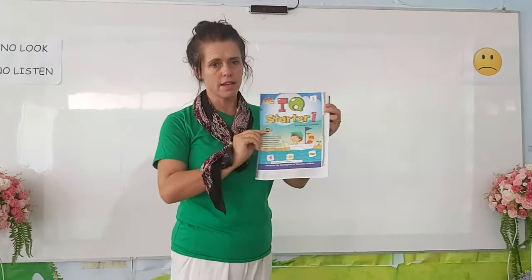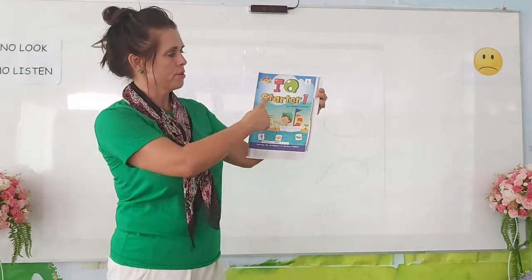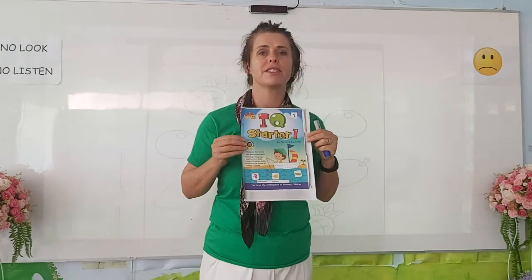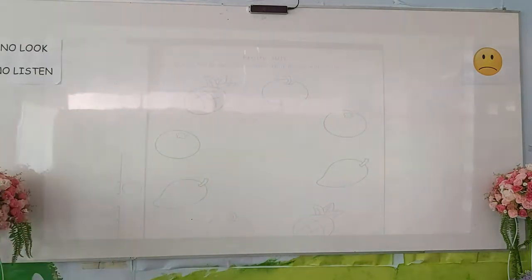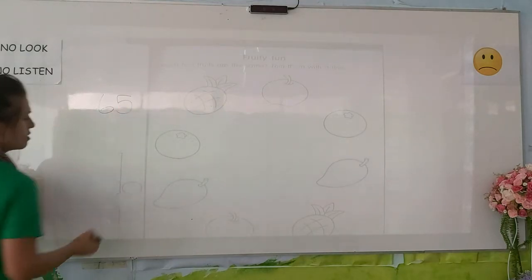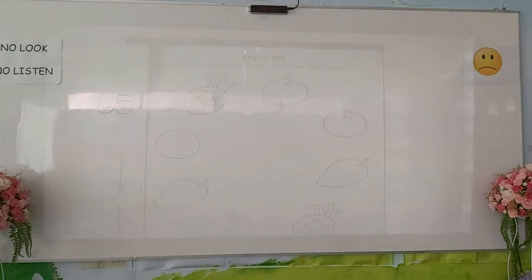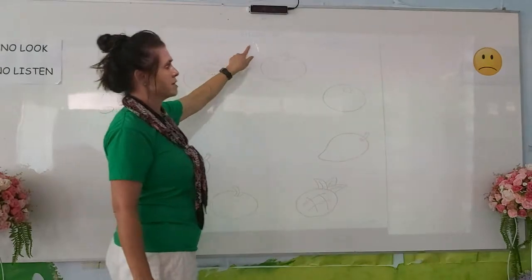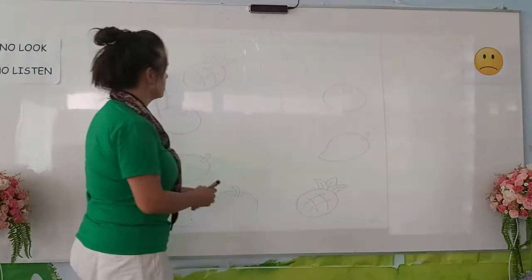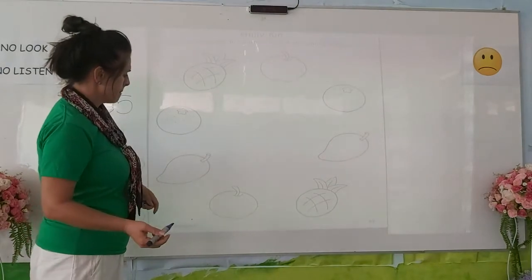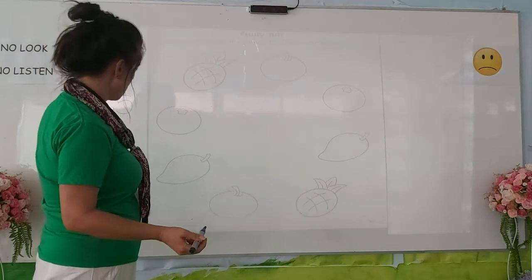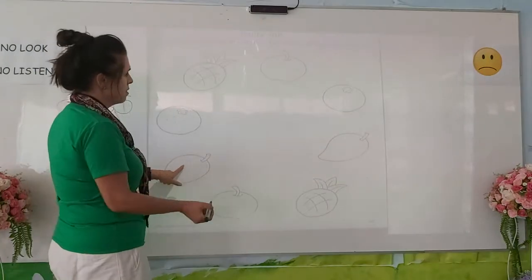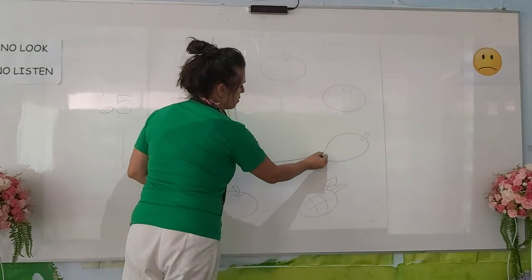Get your book IQ Starter One and open it on page 65. Which two fruits are the same? Join them with a line. Let's see — where is the mango? Join the mango with the other mango.